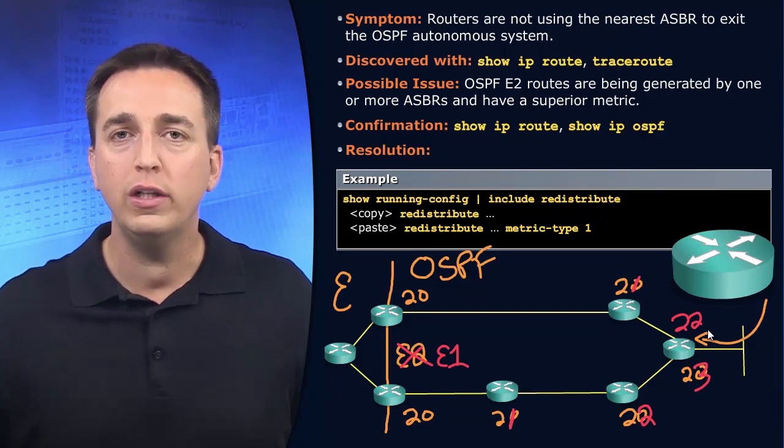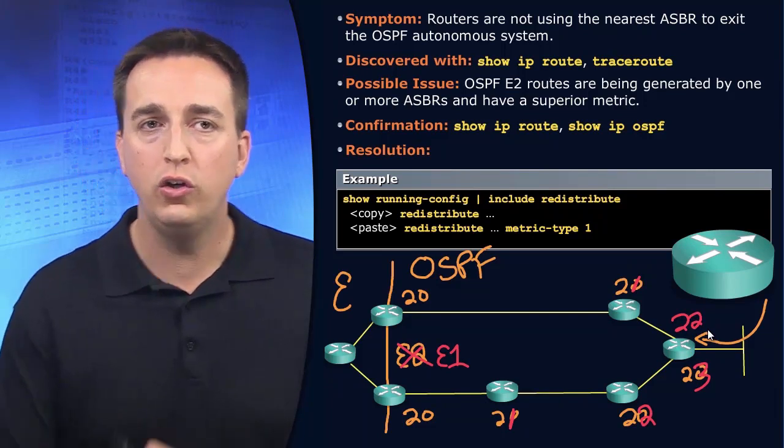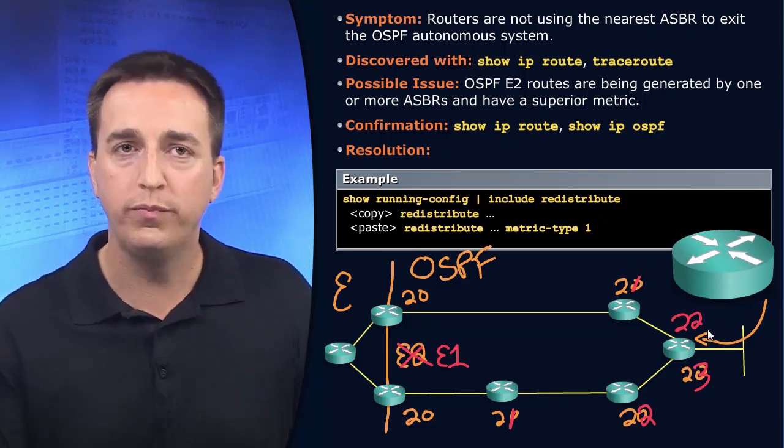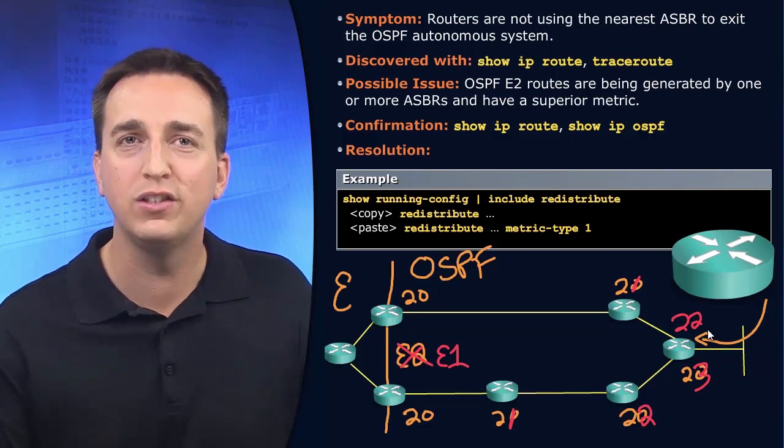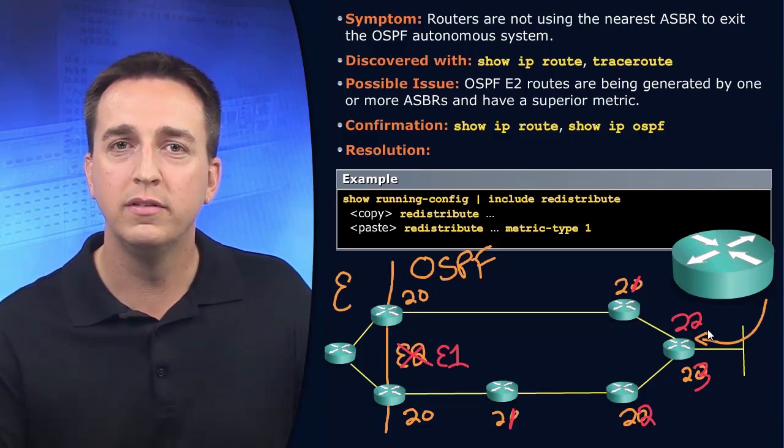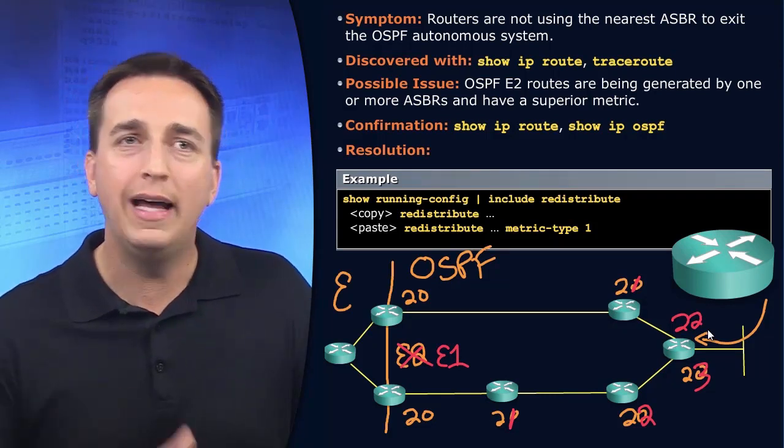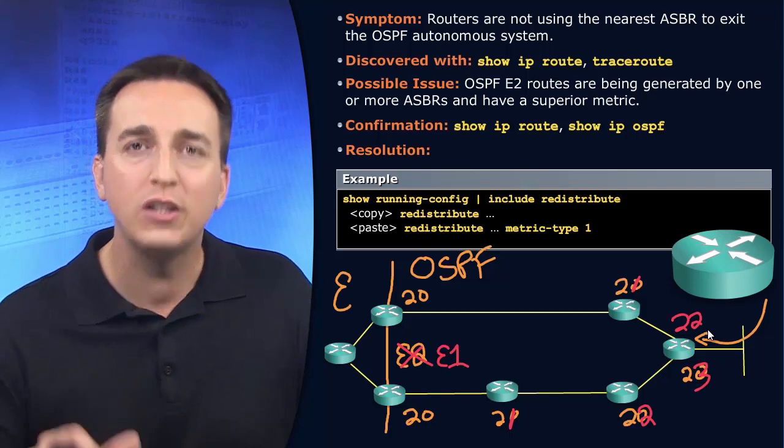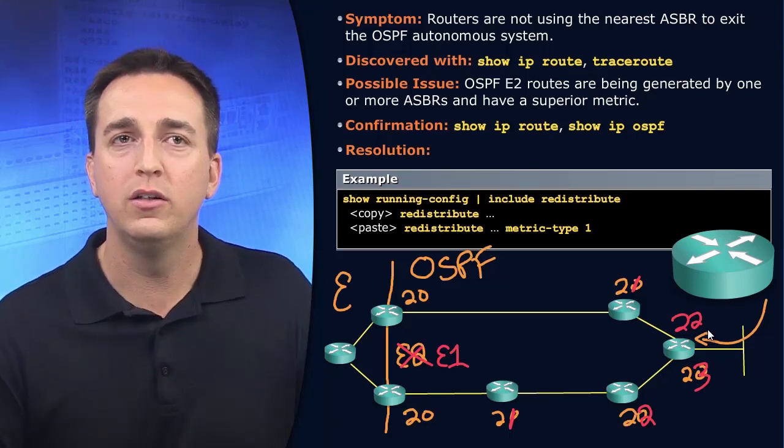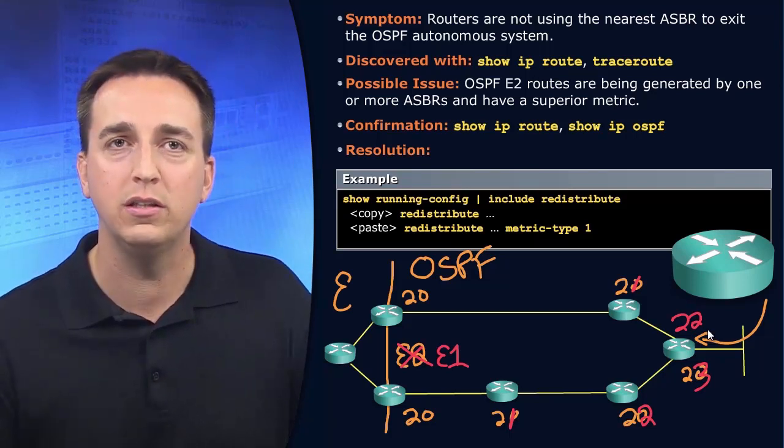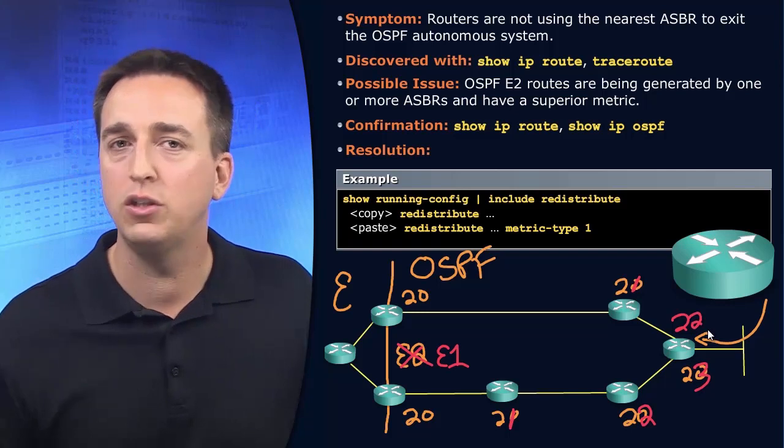So you really have to analyze your topology. When you are experiencing suboptimal routing, your routers may be using an ASBR that they're not supposed to be using to reach those external autonomous systems. You'll have to be able to analyze the topology.